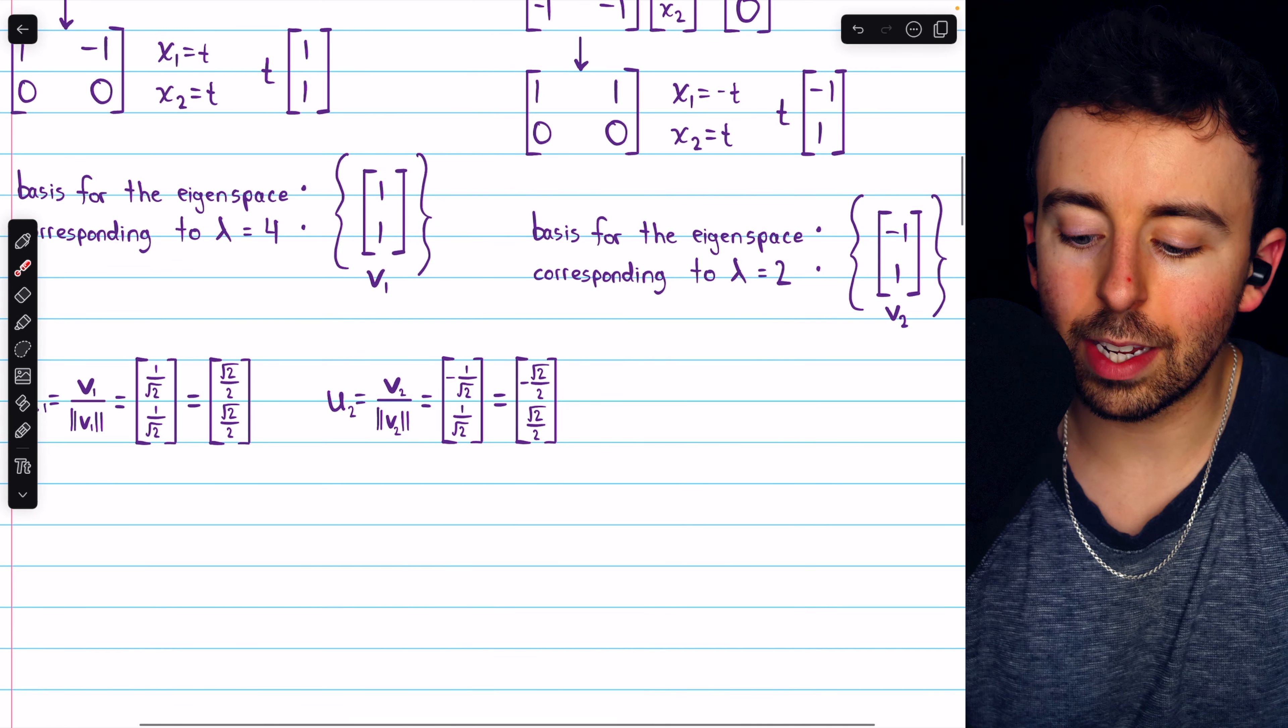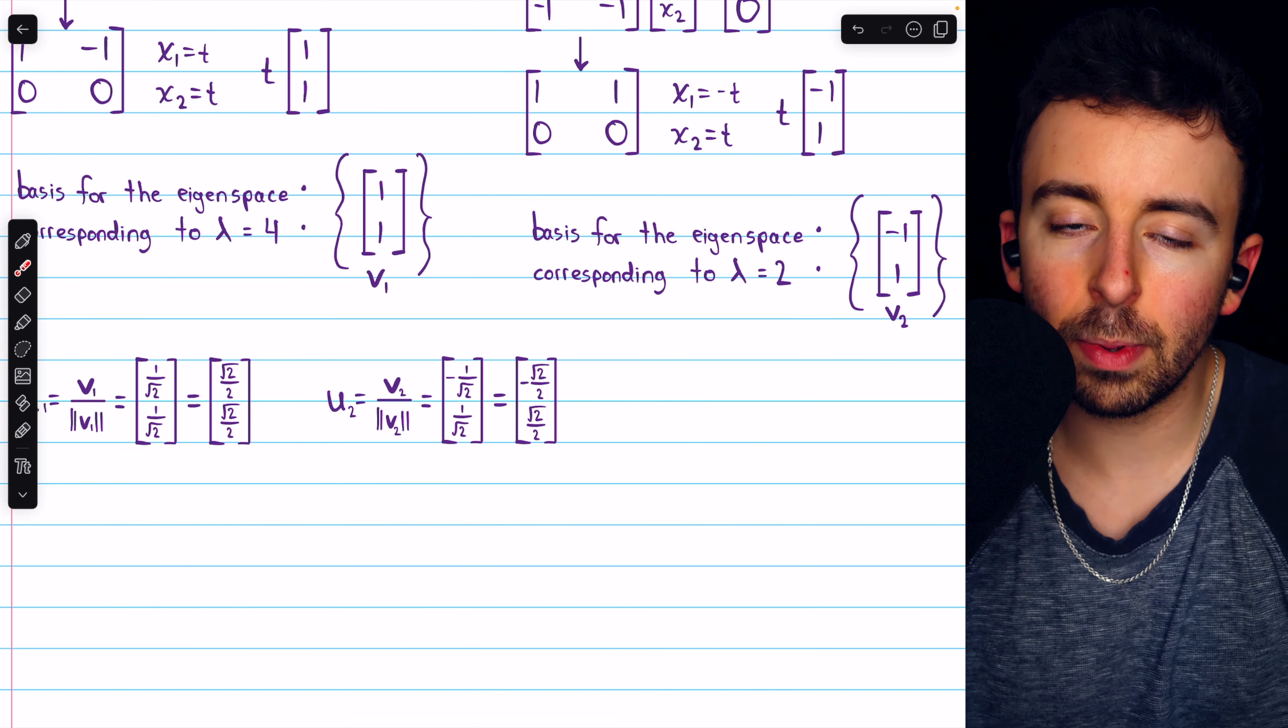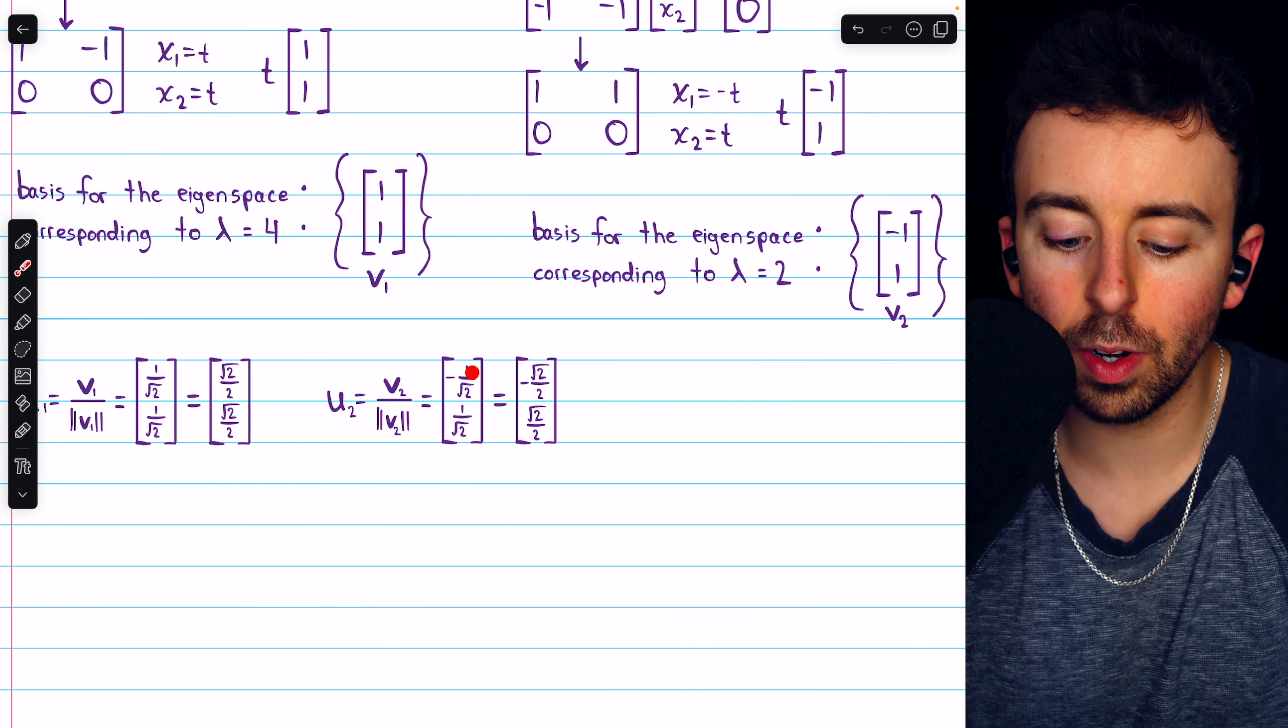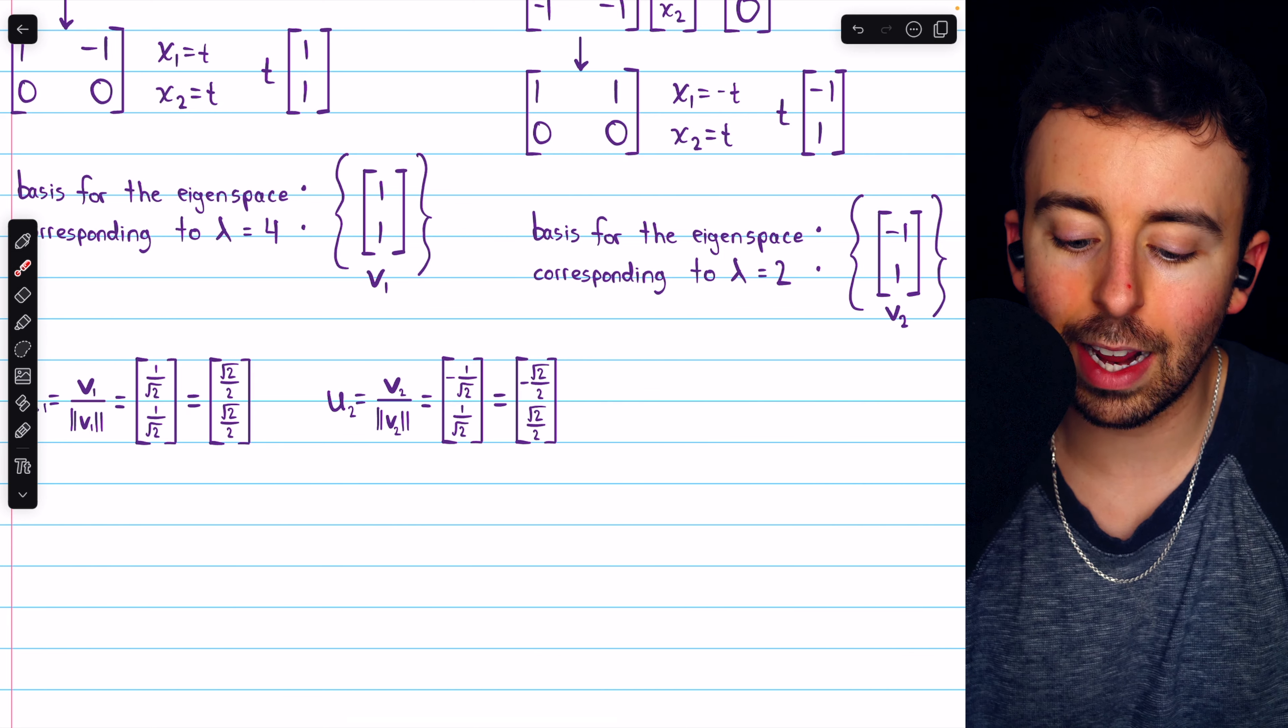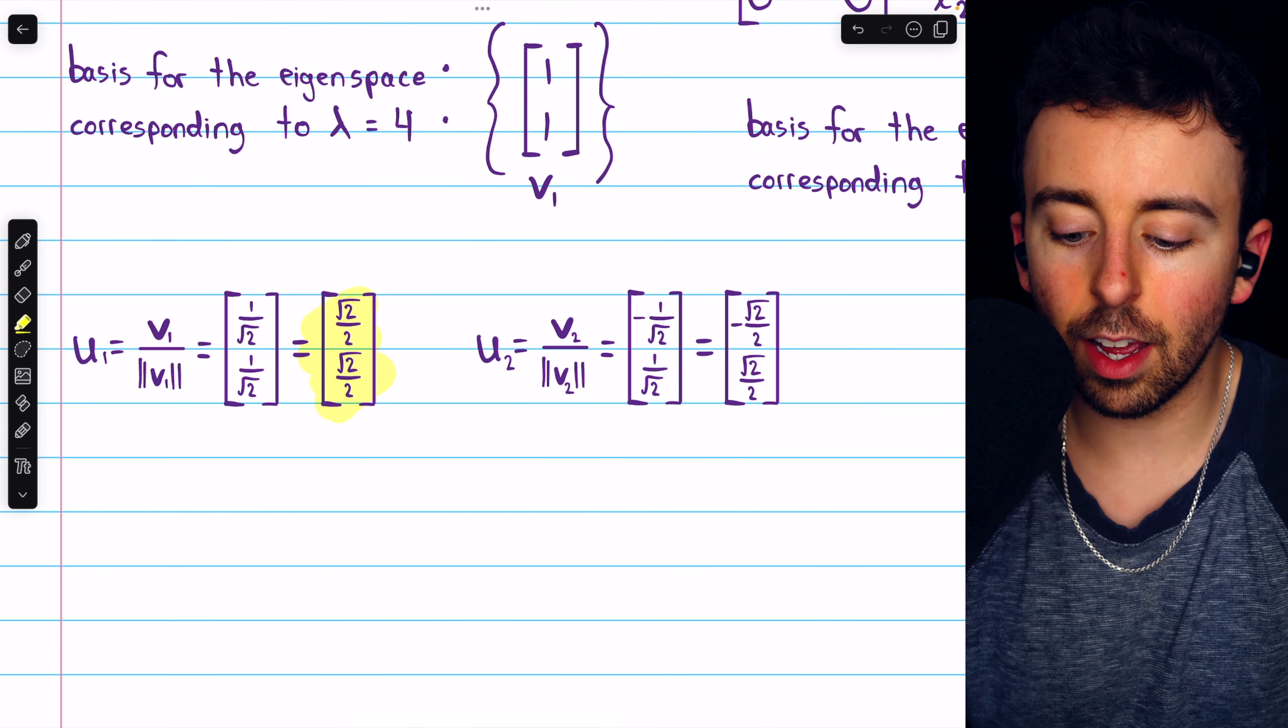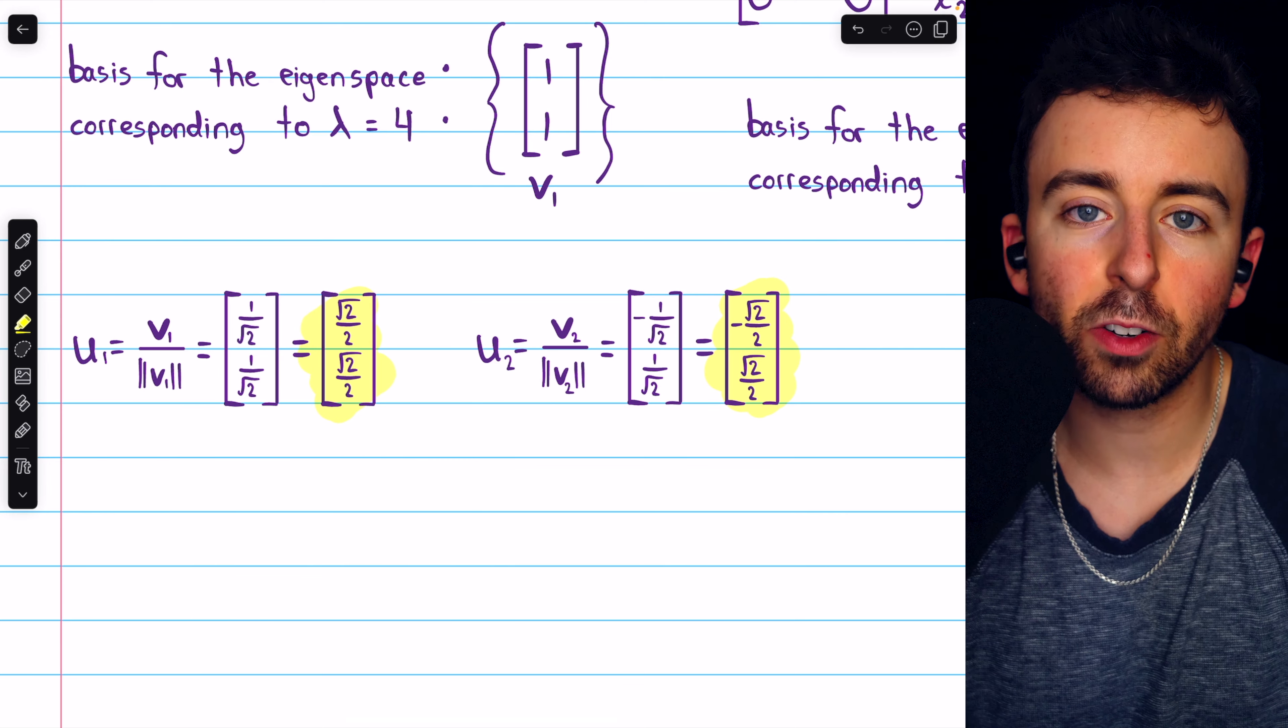Same thing for u2. We take this other eigenvector v2, and its norm is also the square root of 2. So divide it by the square root of 2, and that gives us this unit vector. We can rationalize the denominators to get this unit vector. Now we have a set of orthonormal basis eigenvectors for our 2x2 matrix.